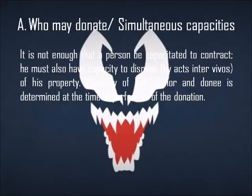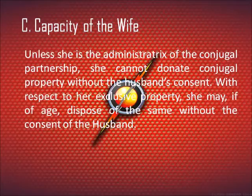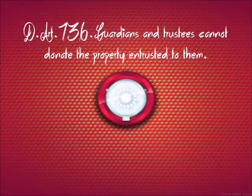Persons who may give or receive donation: Who may donate? It is not enough that a person be capacitated to contract; he must also have capacity to dispose, by acts inter vivos, of his property. Capacity of both donor and donee is determined at the time of the perfection of the donation. The husband is capacitated to donate to his own children, whether of a present or prior marriage and whether legitimate or illegitimate, provided that the donation be taken from his capital or individual property. Unless she is the administrator of the conjugal partnership, the wife cannot donate conjugal property without the husband's consent. With respect to her exclusive property, she may, if of age, dispose of the same without the consent of the husband. Guardians and trustees cannot donate the property entrusted to them according to Article 736, as they can only do acts of administration and not of ownership.